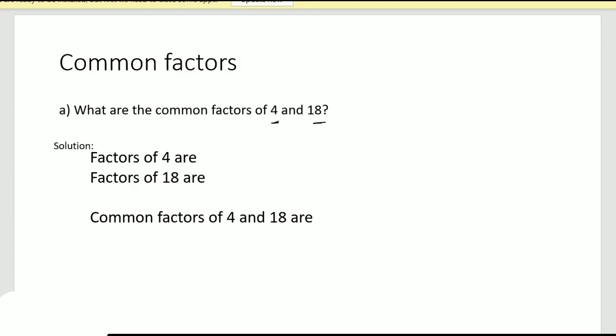So we know that the factors of 4 are one times four and two times two, right? So I just write it in increasing order: 1, 2, and 4. And for 18, it's one times 18, two times nine, three times six, and that's it. So I'll just list it here: 1, 2, 3, 6, 9, and 18. Now I'll just have to see which are the common factors. One is there in both, two is also there, and that's it. So common factors of 4 and 18 are 1 and 2.